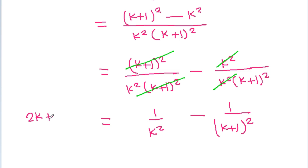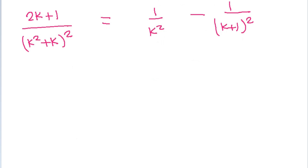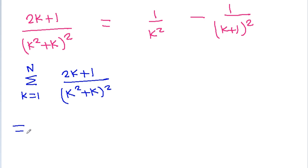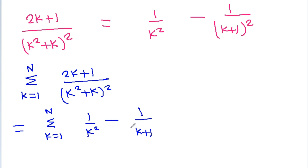It is equal to (2k+1) divided by (k²+k)². So sigma k equals 1 to n of (2k+1)/(k²+k)² equals sigma k=1 to n of [1/k² − 1/(k+1)²]. This is a telescoping series.